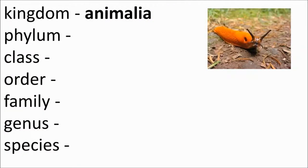The further divisions are: phylum, class, order, family, genus, and species. Let's put this into practice and look at the classification of one particular organism. We are looking at an animal — animalia is the kingdom this one belongs to. See if you can guess what it is.